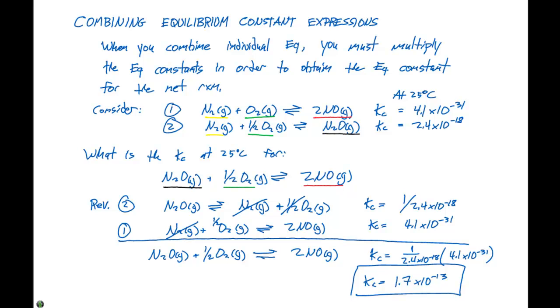When you're combining two equations together to get a net reaction, you have to be able to manipulate the steps of that reaction using the same tactics that we did in the previous video. Then, when we add up all those equations, we're going to multiply the K values to come up with our overall K for the net reaction, which in this case is 1.7 times 10 to the minus 13.